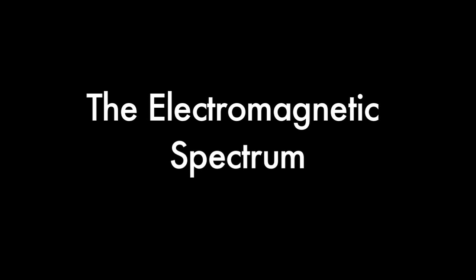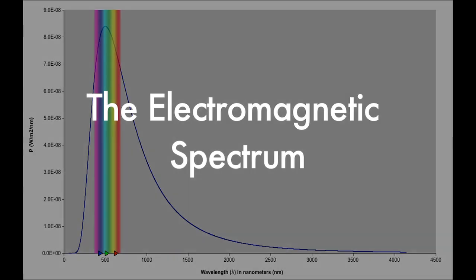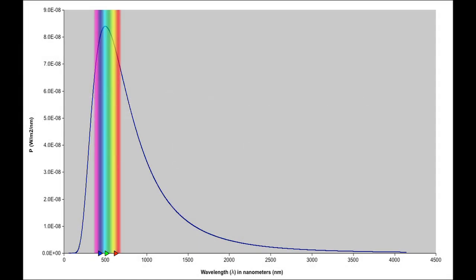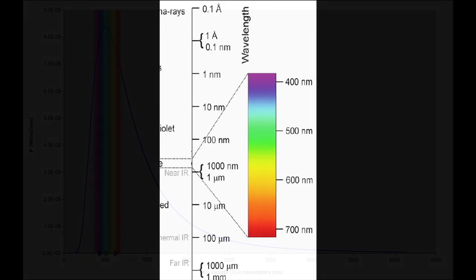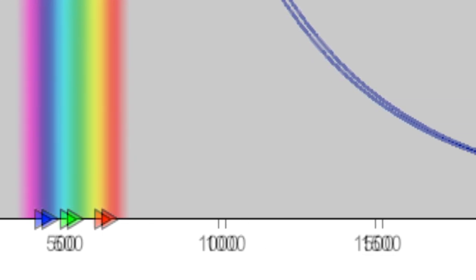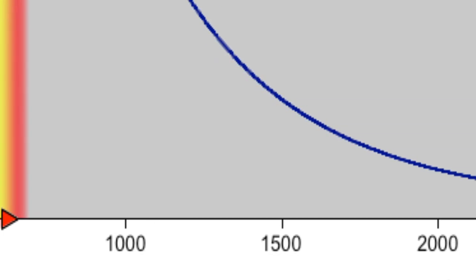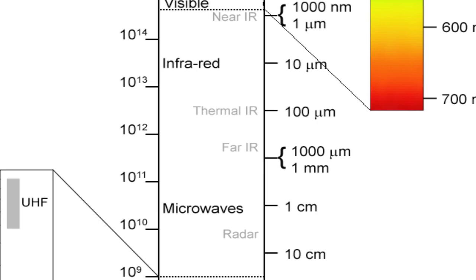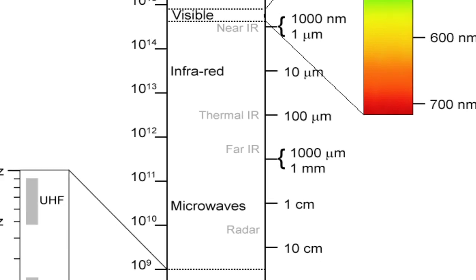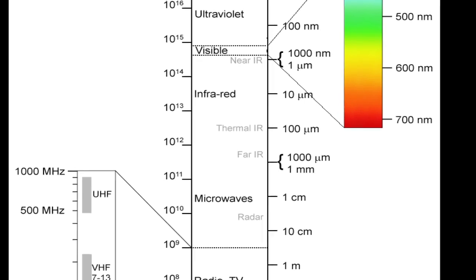Most thermal radiation is invisible to the naked eye. Our eyes are adapted to see only a narrow band of the electromagnetic spectrum, from 390 to 750 nanometers. Beyond 750 nanometers, we find infrared radiation. Most thermal radiation is emitted in the infrared portion of the spectrum, which we can't see under normal circumstances.